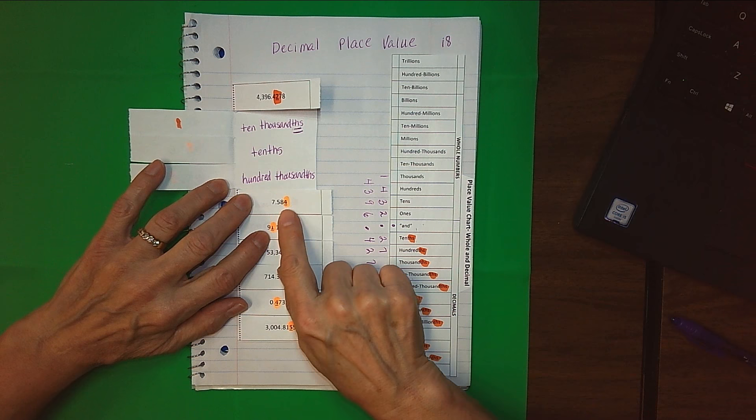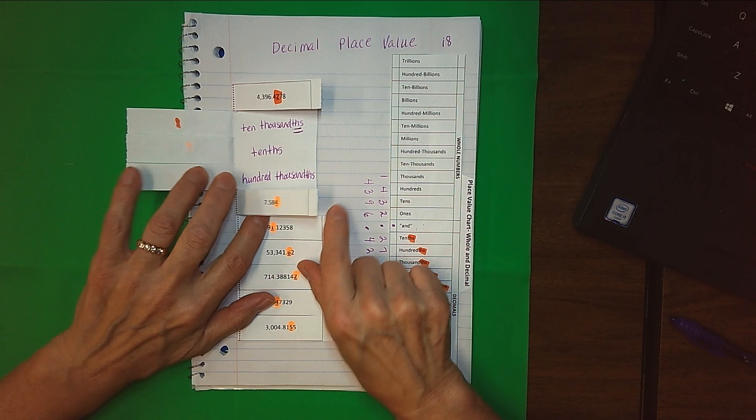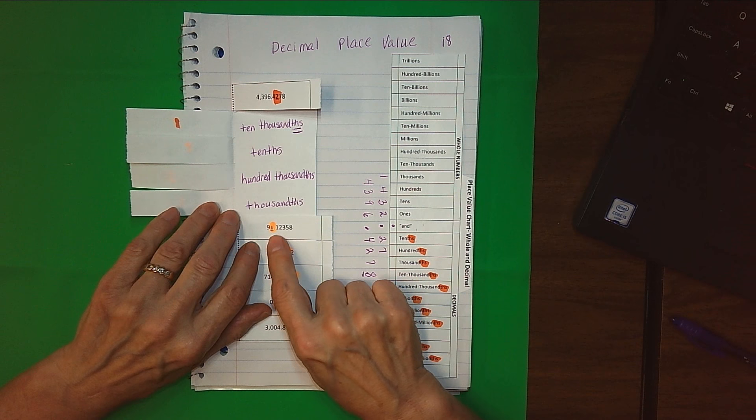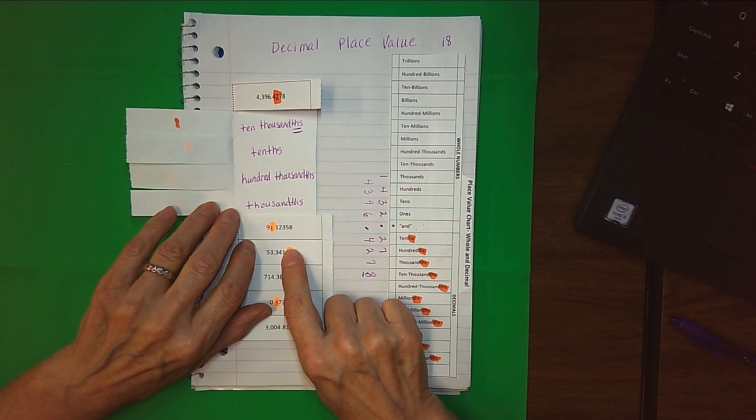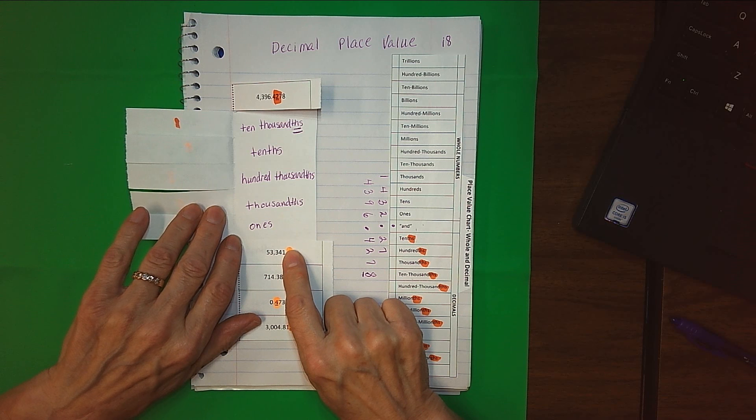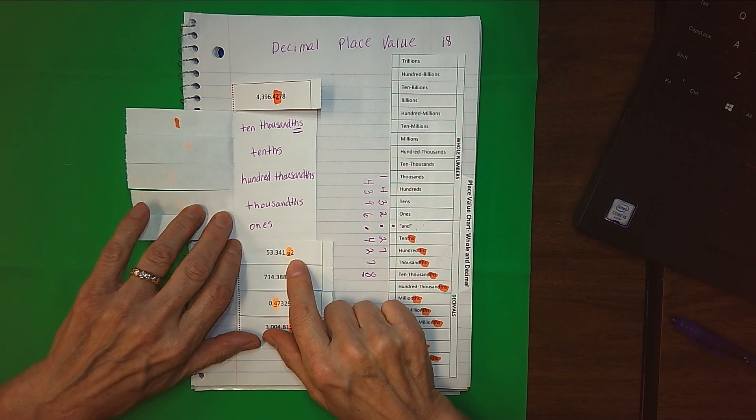Next number, the four is in the thousandths place. Now I tried to fool you a little bit on the next one. The one isn't a decimal number at all, is it? That's in the ones place. Just wanted to make sure you didn't forget what you already know.